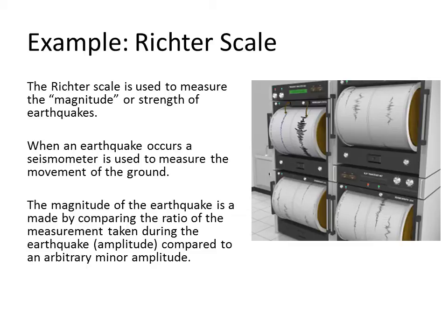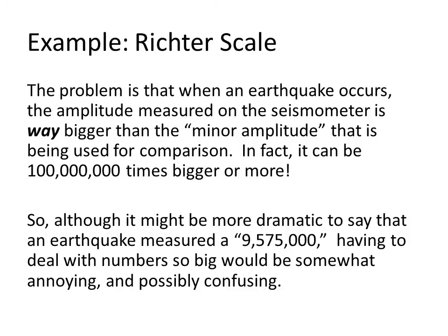The Richter scale is used to measure the magnitude or the strength of earthquakes. When an earthquake occurs, a seismometer is used to measure the movement of the ground. The magnitude of the earthquake is made by comparing the ratio of the amplitude measured during the earthquake compared to the amplitude during a very inactive time, or when there's no earthquake. The problem is that when an earthquake occurs, the amplitude on the seismometer is way bigger than that minor amplitude used for comparison — in fact, it can be up to a hundred million times bigger or more. So although it might be more dramatic to say that an earthquake measured nine million five hundred and seventy-five thousand, having to deal with numbers so big would be somewhat annoying and even possibly confusing.